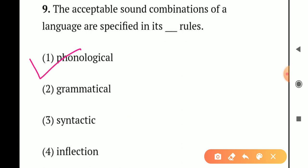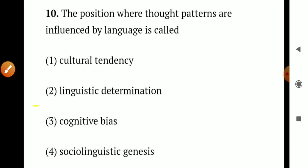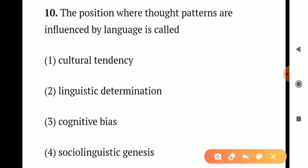Question number 10. The position where thought patterns are influenced by language is called: Option 1 - cultural tendency. Option 2 - linguistic determination. Option 3 - cognitive bias. Option 4 - social linguistic genesis. When language influences thought patterns, this is called social linguistic genesis. So the correct answer is Option 4 - social linguistic genesis.